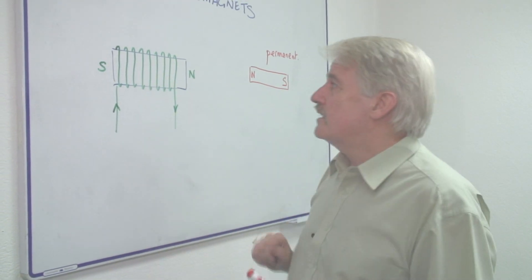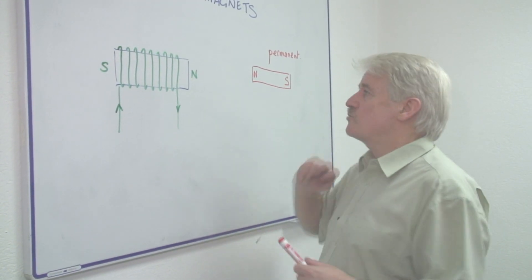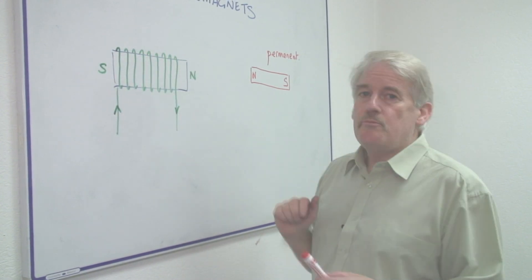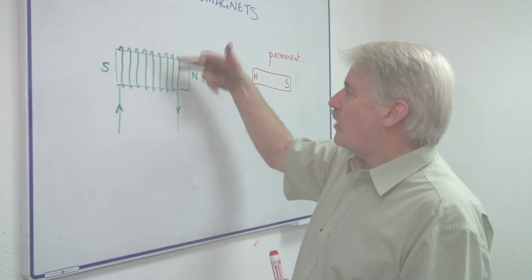So this is why we call it an electromagnet because the electricity creates the magnetism. Now obviously this magnet is different from this one.